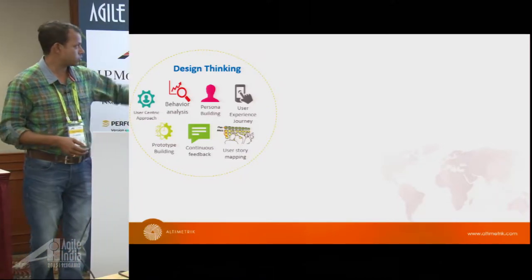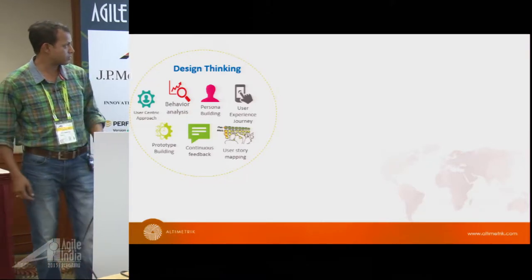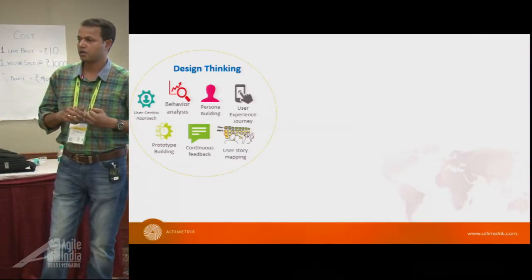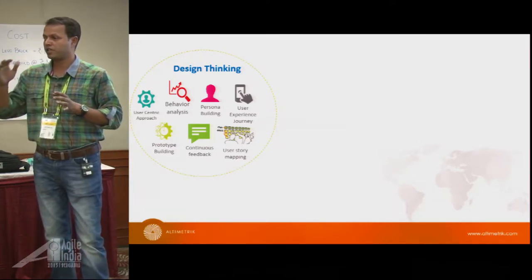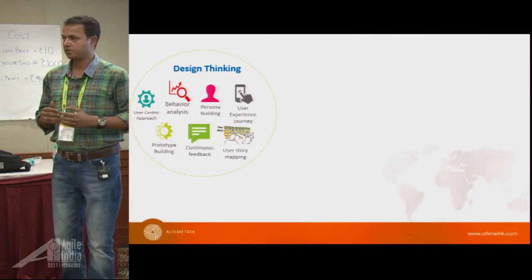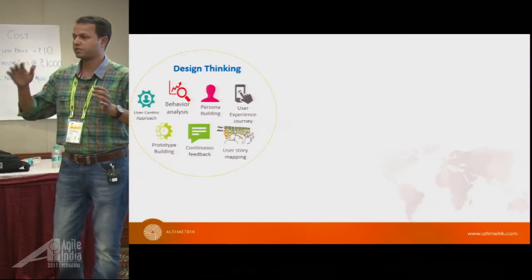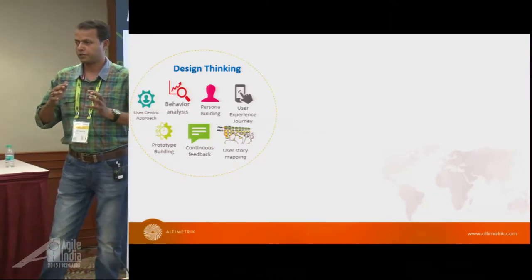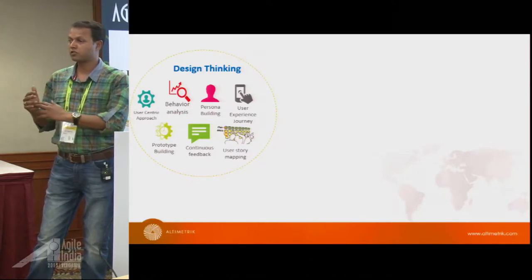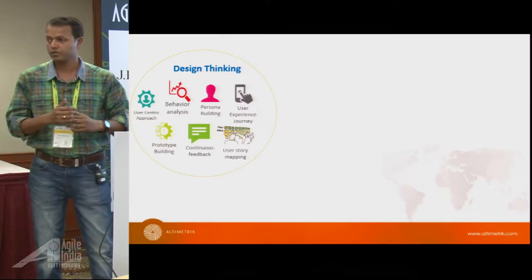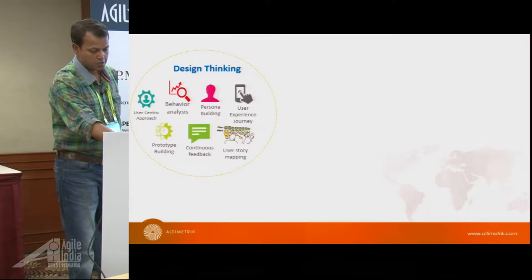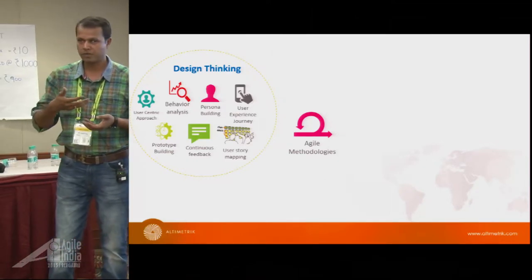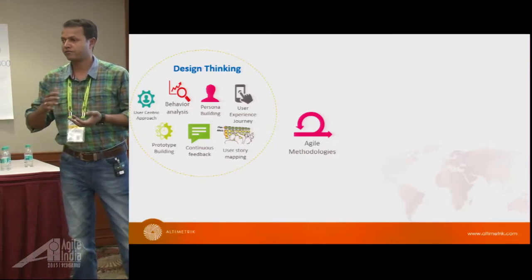The ingredients of design thinking include understanding user behavior analysis, building personas, and understanding the user's experience journey into the system - what touch points they will have. This helps find missing gaps or unexpected system behavior. In addition to design thinking, we are building this on top of our Agile methodology - specifically the Scrum framework as the base - and building our approach on top of that.